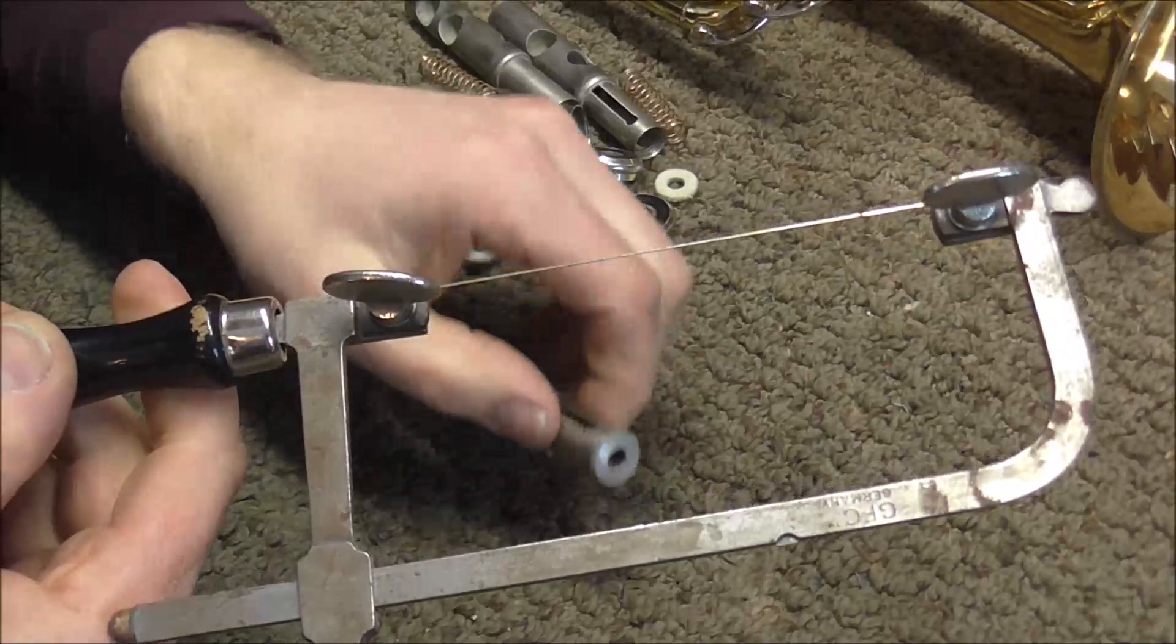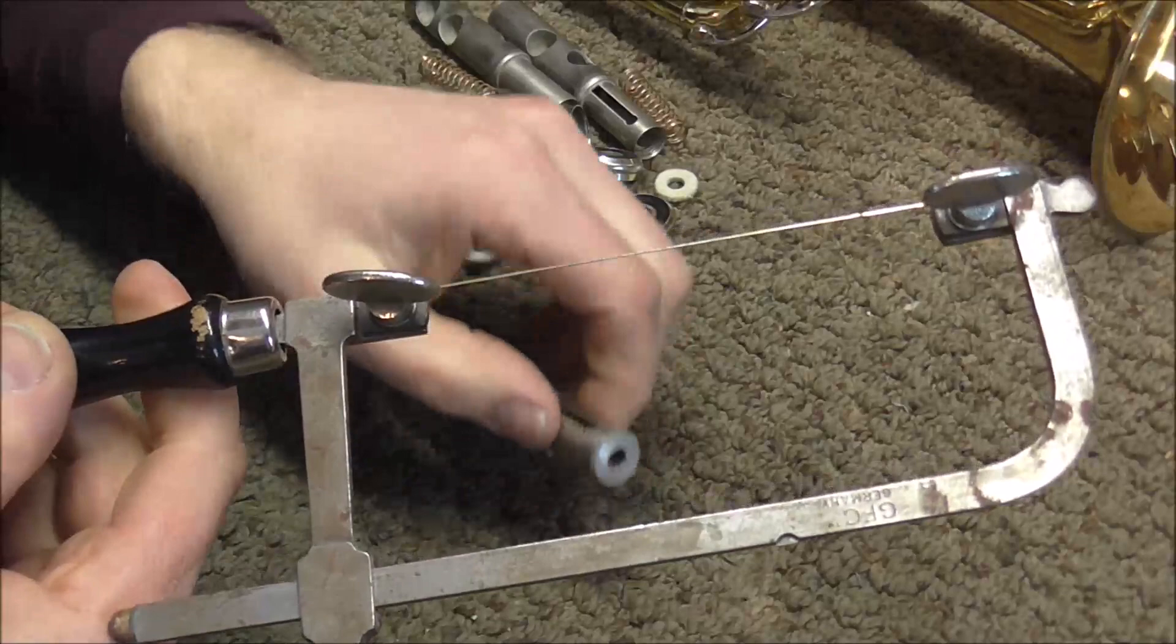But sometimes valve stems will break off and they will be really stuck in here. And there is another way to get those out. This is a jeweler's saw. It has a very small blade on it. And I'm going to use that to make a series of cuts in the broken valve stem.